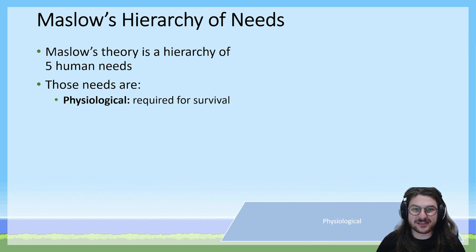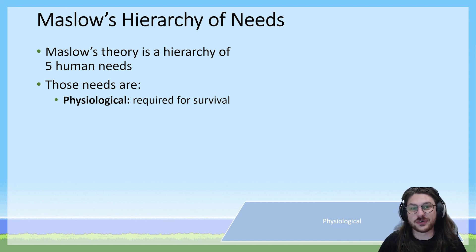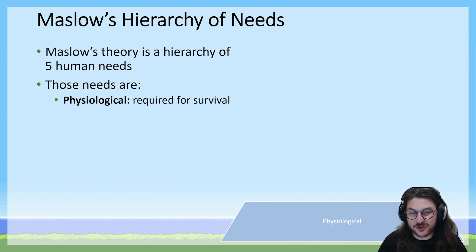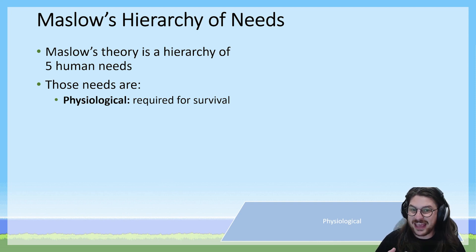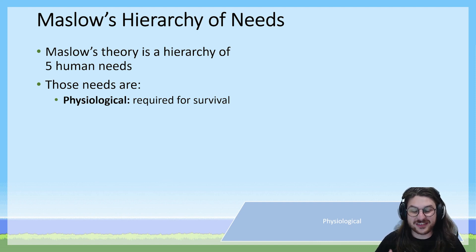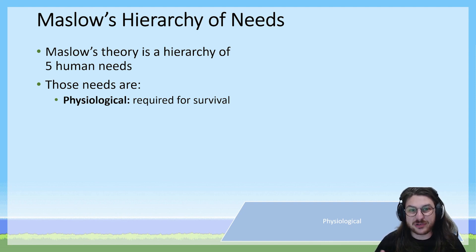At the base level, Maslow says that we are all driven to achieve our physiological needs — the things you need for survival, the biological requirements of being a human being: air to breathe, water and food to sustain your body, shelter and clothing to protect you from the elements. These are your physiological needs.